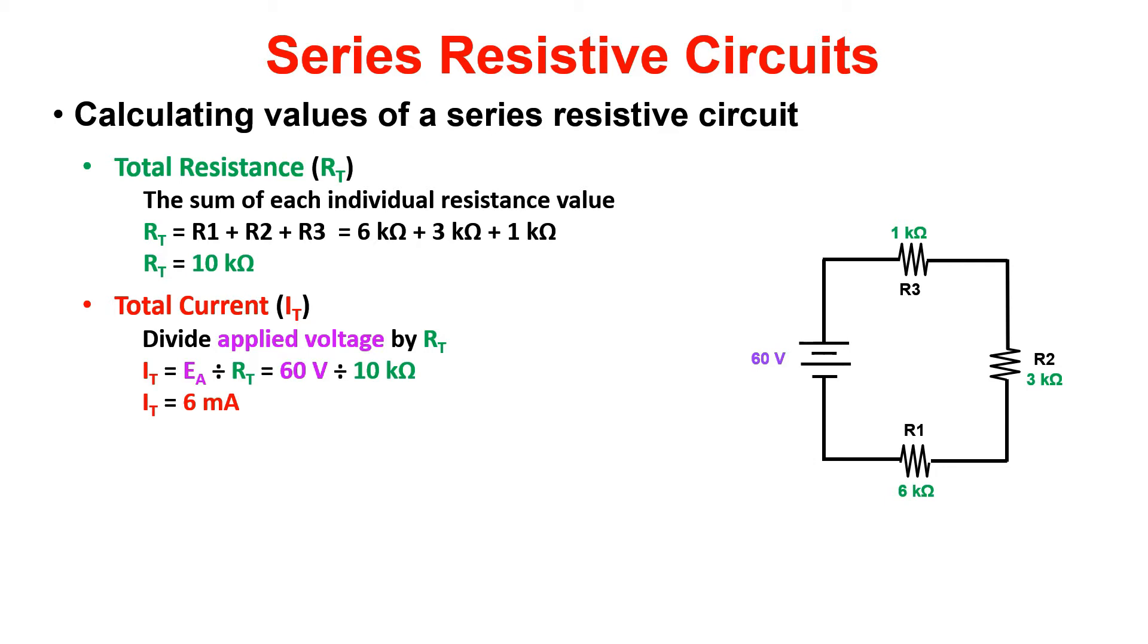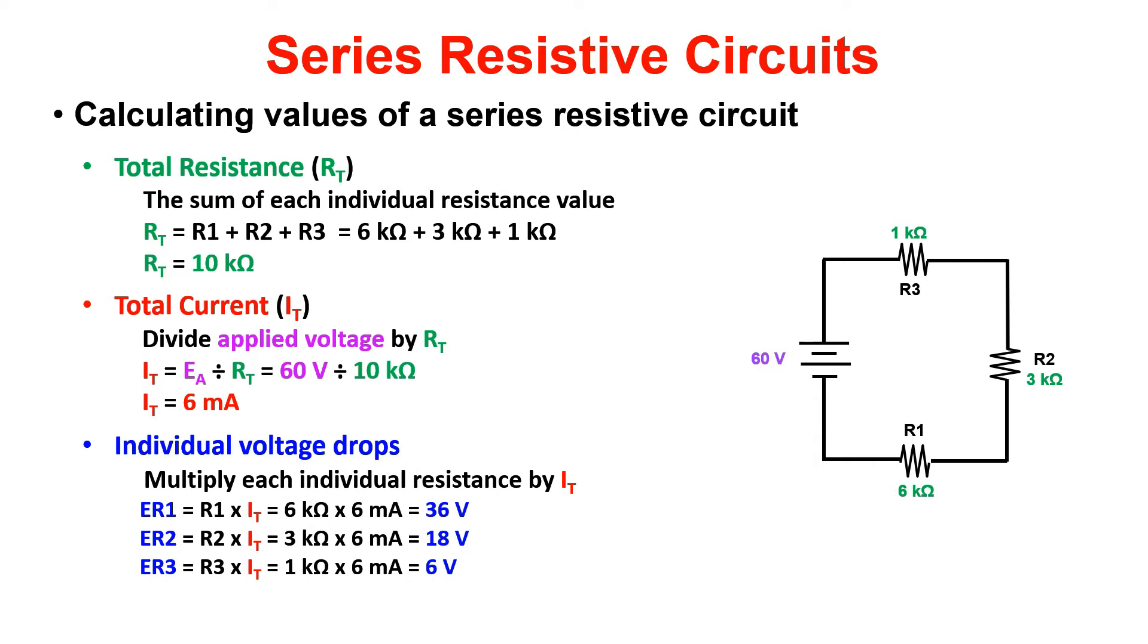Now, to calculate the individual voltage drops for each resistor. Take each individual resistor value and multiply it by the total current, 6MA. These will be expressed as ER1, ER2, and so on.